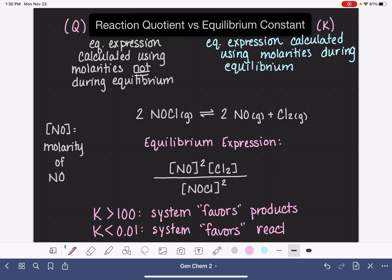And if our value of K is somewhere in the middle of these two numbers, so somewhere between 0.01 and 100, that type of system we say is pretty well balanced. It doesn't really have a strong preference for either the products or the reactants.